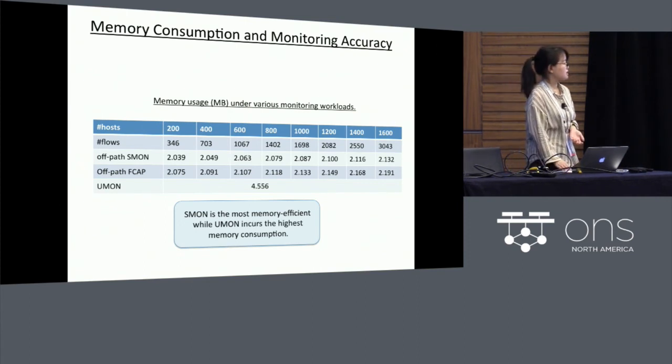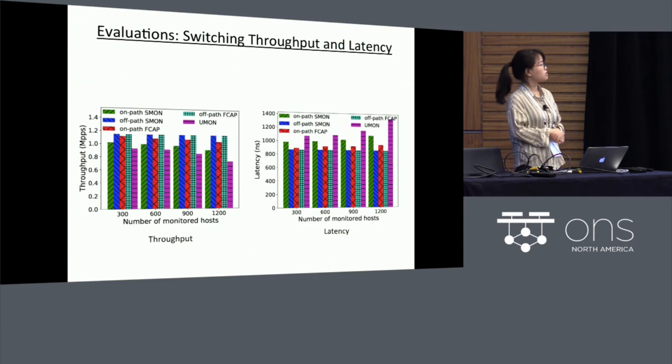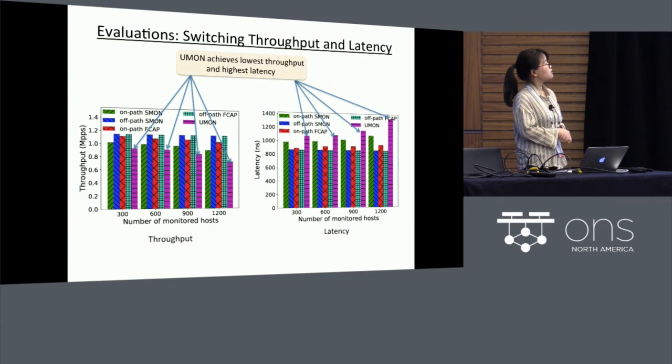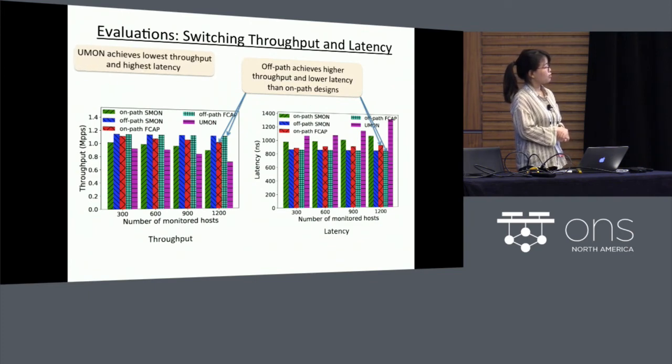And to further study the impact of our monitoring functions on the overall switching performance, we use the DPDK-based packet generator, MoonGen, to generate high-speed traffic. Here, we show the throughput and the latency of the different monitoring designs under various monitoring workloads. We can find that UMON achieves the lowest throughput and highest latency. However, the off path brings the minimal impact on the overall switching performance.